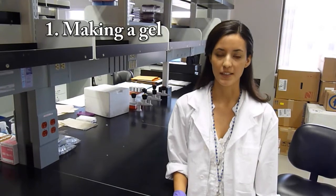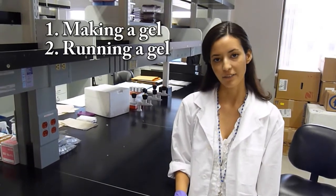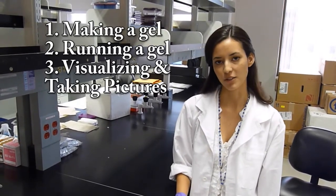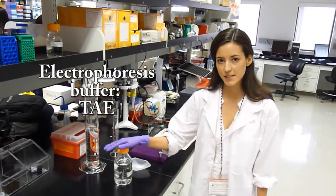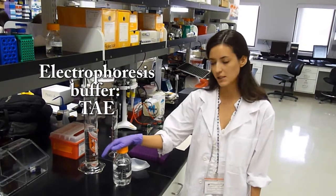This process is usually separated into three parts. The first is making the gel, the second is running the gel, and finally, visualizing and taking pictures of your gel. The materials you will need for this process are electrophoresis buffer. In this case, we're going to be using TAE.